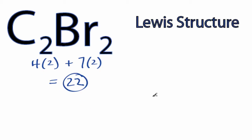Carbons are less electronegative than bromine, so we'll put the two carbons in the center and then the bromines will go on the outside.